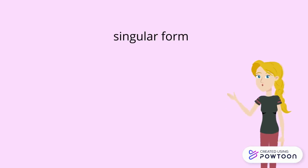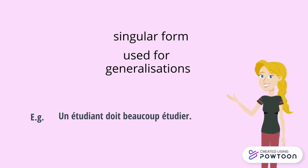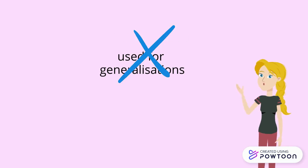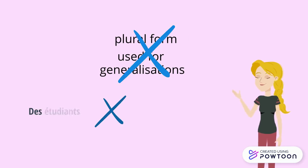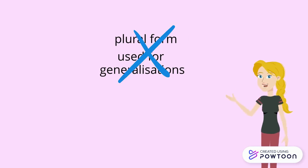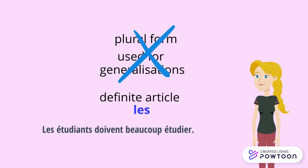Note that the singular form can be used for generalizations. For example, 'un étudiant doit beaucoup étudier' means 'a student must study a lot' — we are talking about students in general. This is not the case for the plural form. You cannot say 'des étudiants doivent beaucoup étudier' to talk about the student community. You will use the definite article 'les' instead: 'les étudiants doivent beaucoup étudier', meaning 'students must study a lot'.